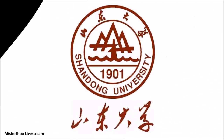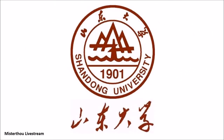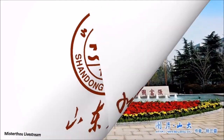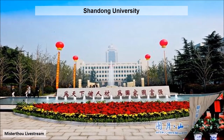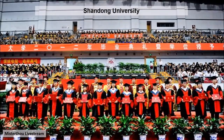Number 9: Shandong University. It was built in 1901. The world rank of this university is number 569, and it gets number 9 of the top 10 universities in China.